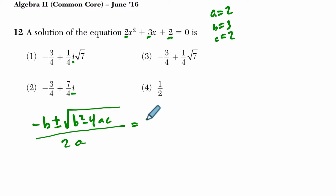So we get negative 3 plus or minus b squared, which is 9, minus 4 times a times c, so 4 times 2 times 2, which is 16, over 2 times 2, which is 4.